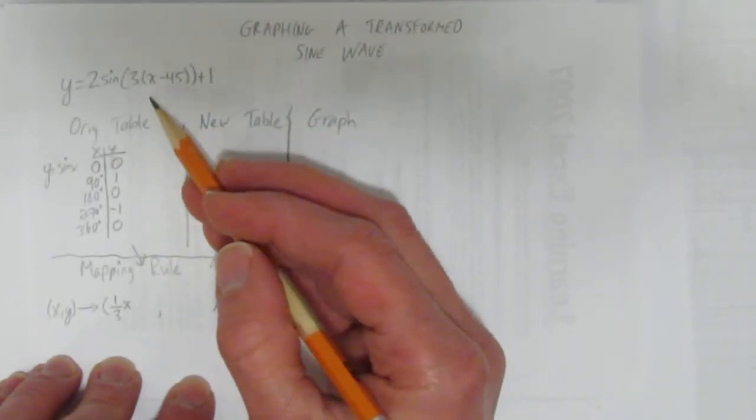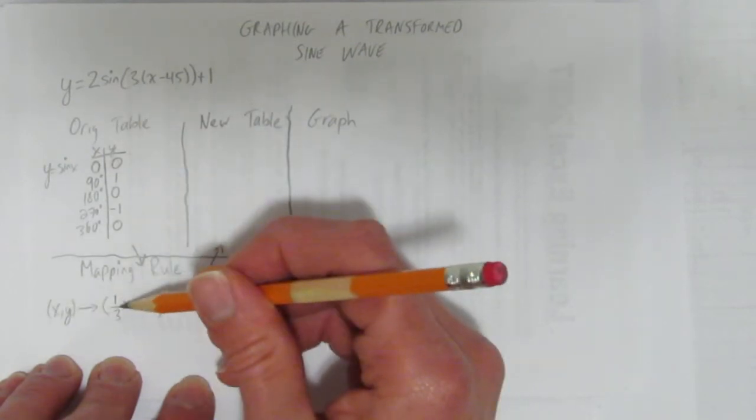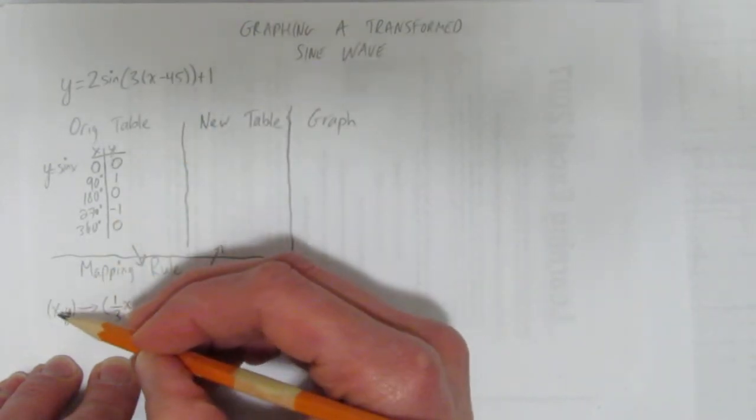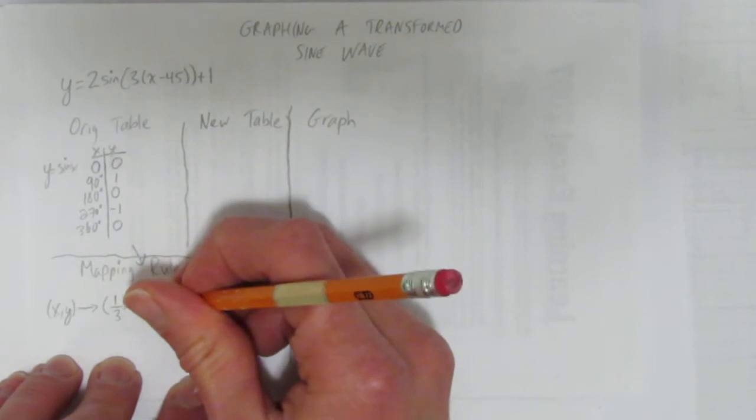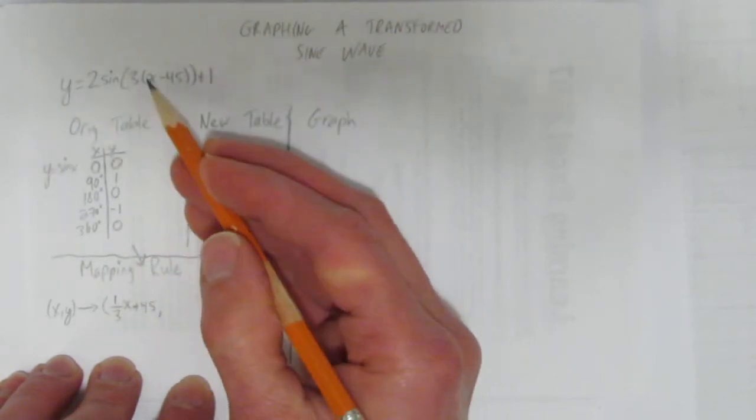However you learn it, it's important to know since it's times by 3, the mapping rule says, hey, you're going to take all the x's and divide them by 3 or times them by a third. And instead of minus 45, you're going to take all your x's and add 45. That's the x part of the mapping rule for this equation.